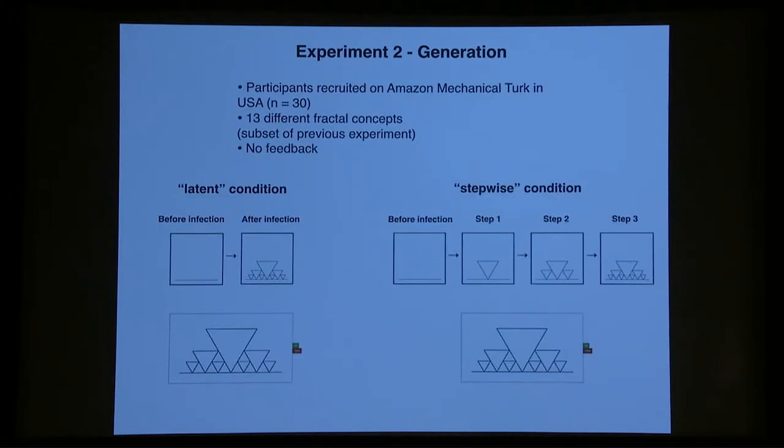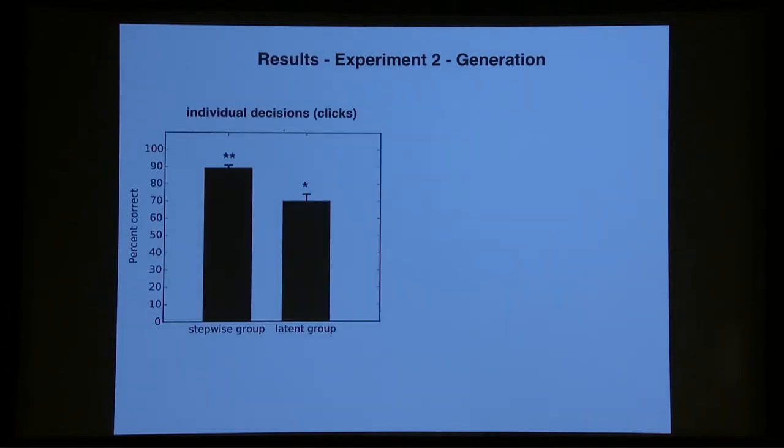Again, we ran a very similar experiment. We could only use some of the concepts from the previous experiment because otherwise the line segments get very small and you couldn't click them. So we used the ones with the bigger line segments. And again, there was no feedback and there were these two different conditions. This is what we found on the y-axis is the performance again. And the first metric we looked at was the individual clicks. So for each click, for each growth, was the right judgment made by the participants? In the stepwise group, the performance is around 90% correct and 70% for the latent group.